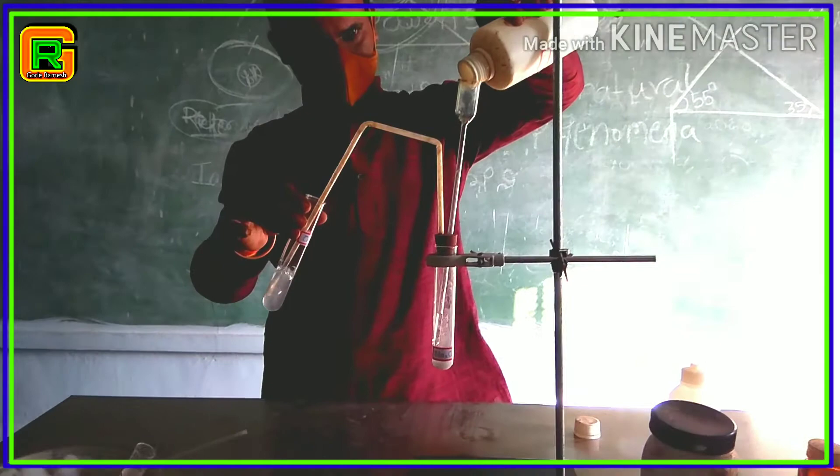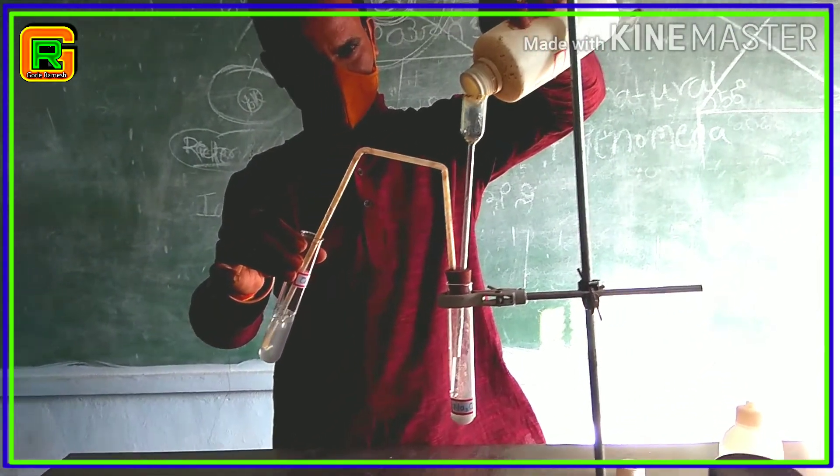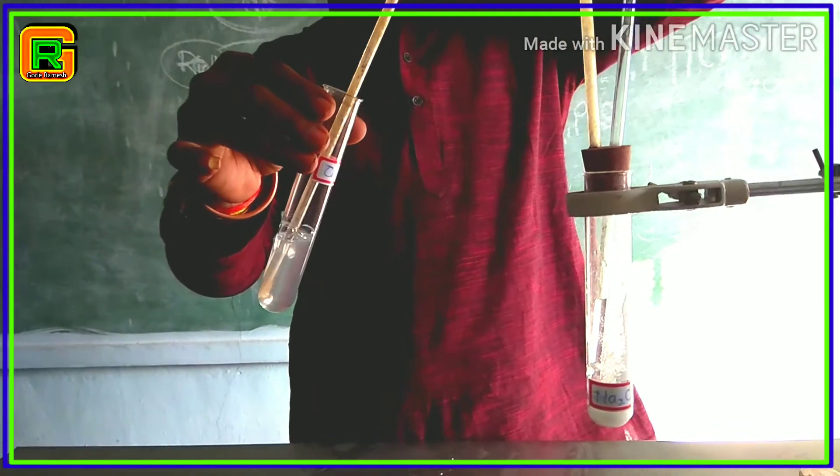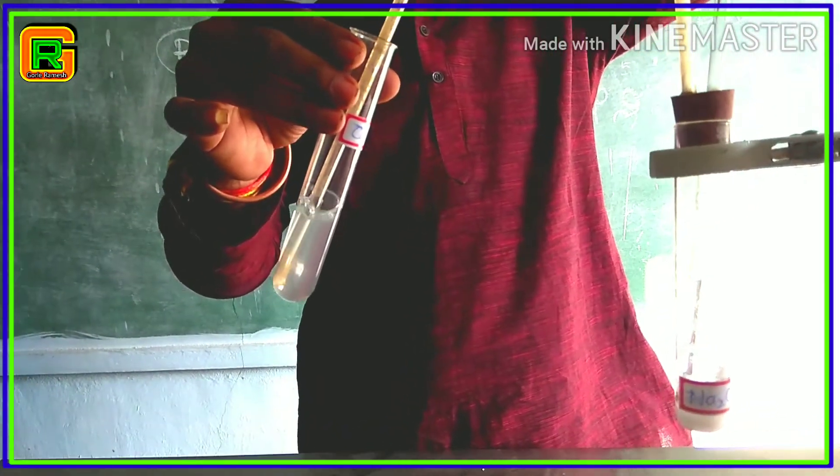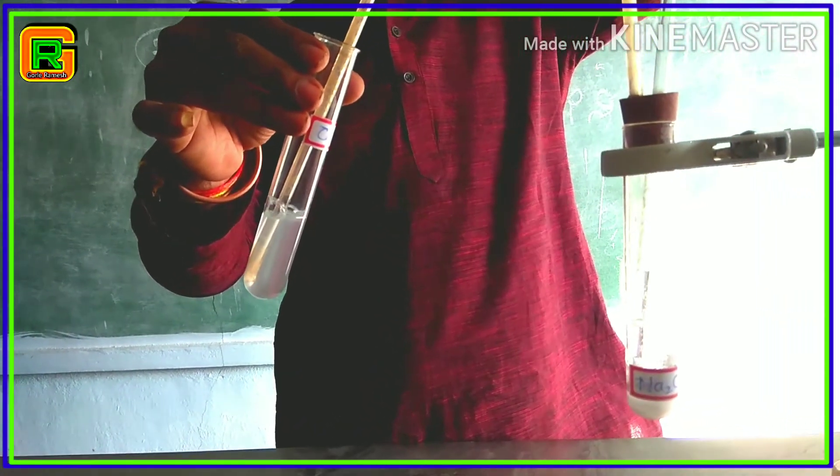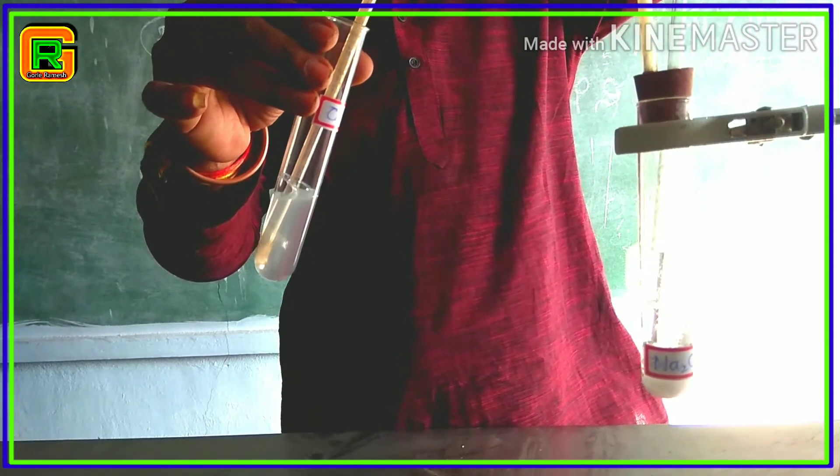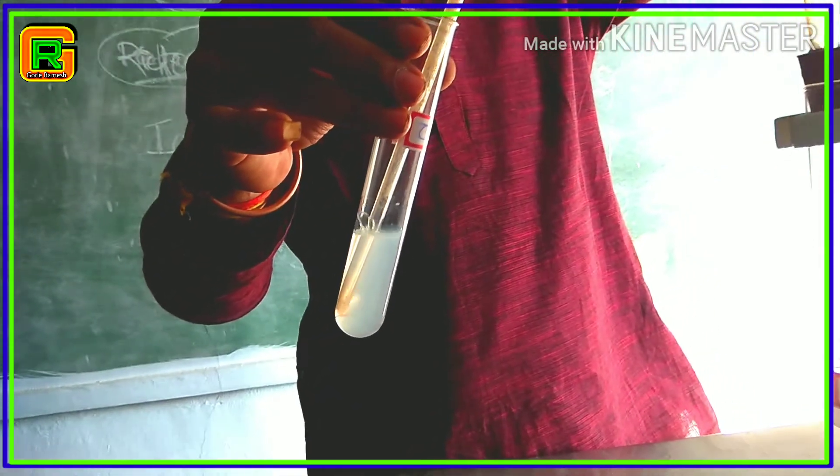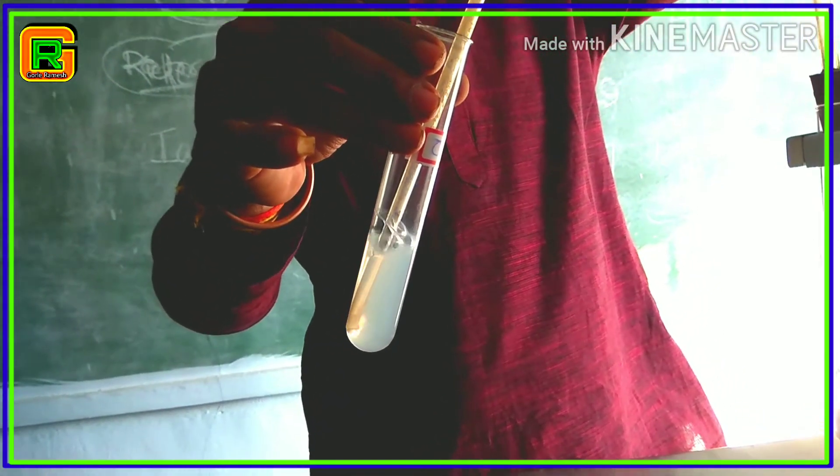What do you observe? One type of gas is evolved when dilute HCl is added with sodium carbonate. Now, pass the gas produced through lime water and observe carefully. Here, the colorless lime water gradually turns into white color. This white colored precipitate is calcium carbonate.